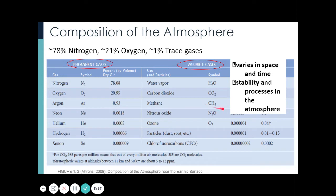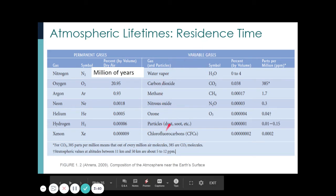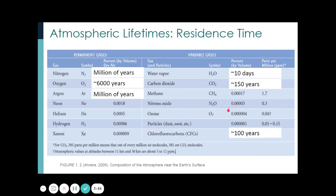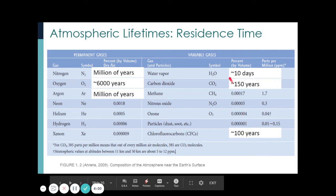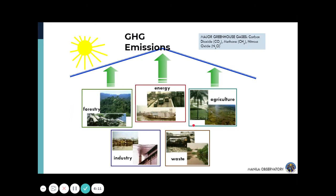Variable gases identify the stability and processes in the atmosphere compared to permanent gases. Permanent gases stay in the atmosphere for a very long time — nitrogen takes millions of years, oxygen around 6,000 years. For our greenhouse gases including water vapor, it's only a few days; for carbon dioxide, more than a human lifetime; CFCs also more than a human lifetime. These greenhouse gases control our atmospheric circulations, weather, and climate.